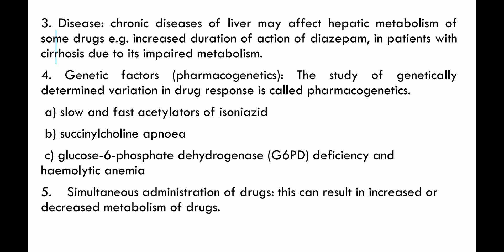Fourth is genetic factors, also called pharmacogenetics — the study of genetically determined variation in drug response. Examples include slow and fast acetylators of isoniazid, succinylcholine apnea, glucose-6-phosphate dehydrogenase deficiency, and hemolytic anemia. Fifth parameter is simultaneous administration of drugs, which can result in increased or decreased metabolism of drugs when two drugs are taken concurrently.